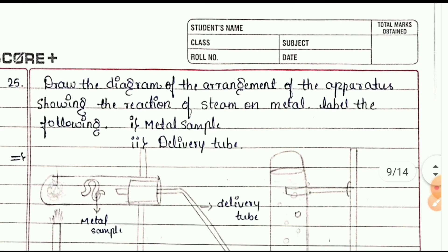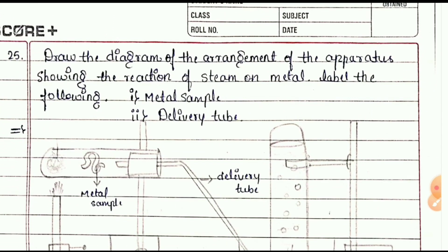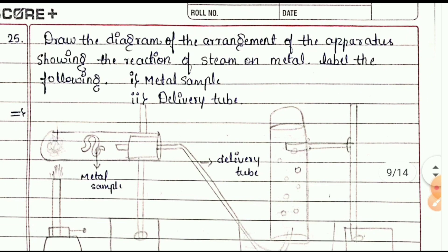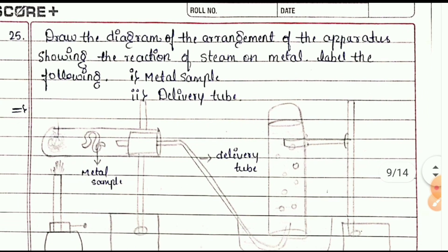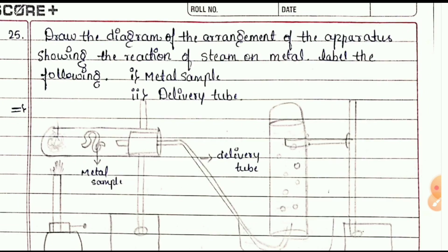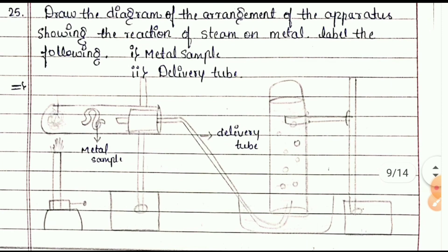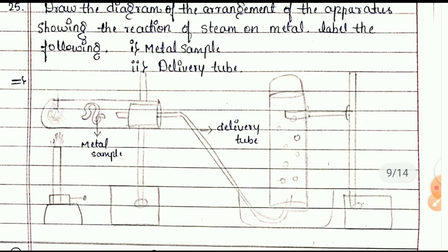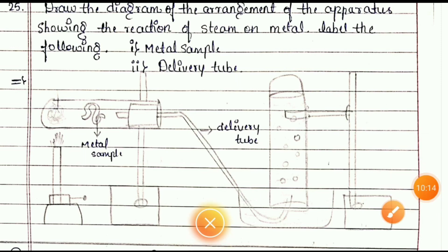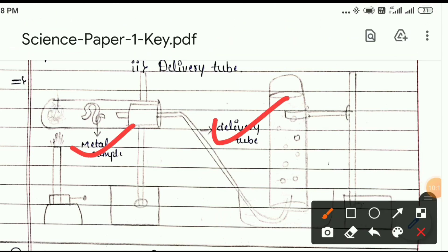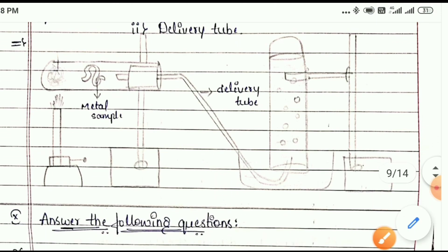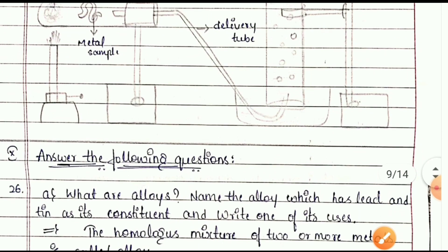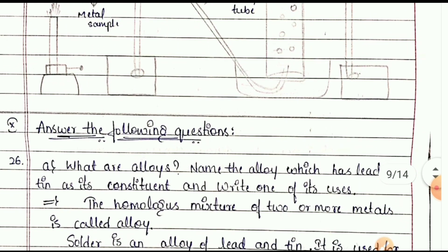This is also a three-mark question: draw the diagram of the arrangement of apparatus showing the reaction of steam on a metal, and label the metal sample and delivery tube. You can see the diagram with these parts labeled.